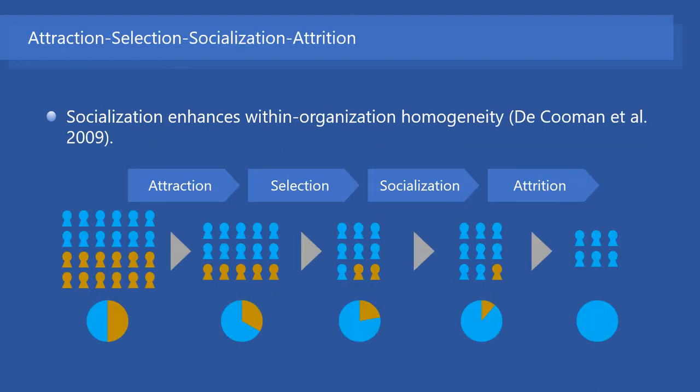Kuhnman and colleagues combined socialization theory with the ASA model and showed that socialization as well as the attrition process enhance organizational members' homogeneity. Attraction and selection are phases before entering the organization.